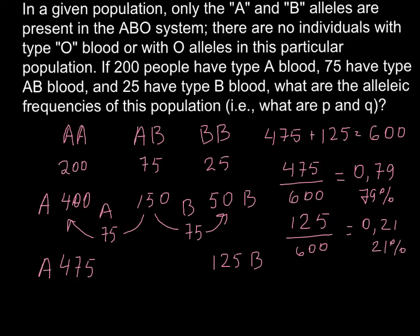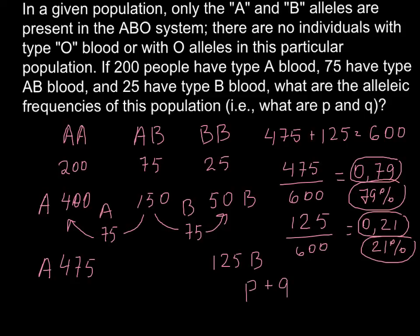So if we add these two numbers we are going to get 100 percent. Both answers would be correct. We can say 0.79 frequencies or 79 percent or 0.21 or 21 percent. Any answer would be correct because p plus q always equals to 1 and 1 equals to 100 percent. Here is the frequency of the allele A and here is the frequency of the allele B.